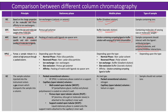High performance liquid chromatography (HPLC) pumps a sample mixture in a solvent at high pressure through a packed column. The stationary phase depends upon the type of HPLC: for normal phase, the stationary phase is polar silica particles; for reverse phase, it is non-polar silica particles.